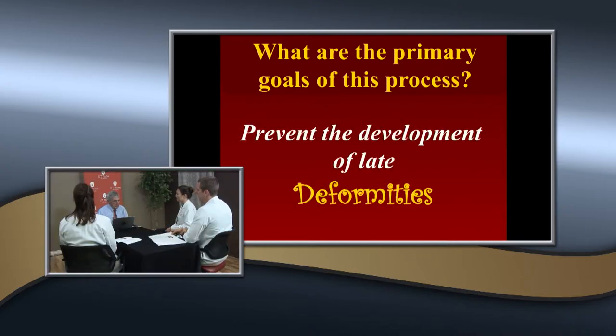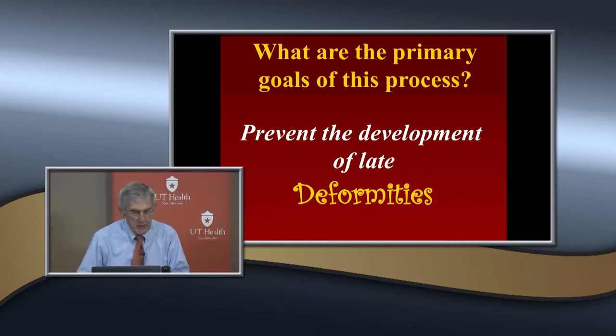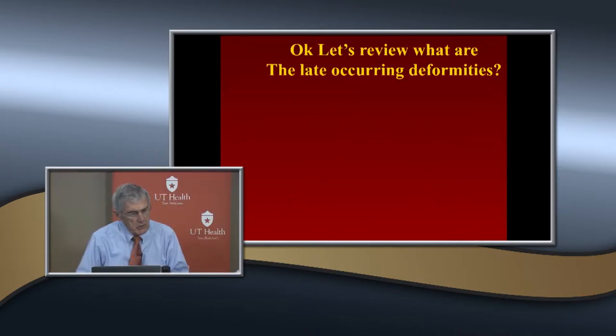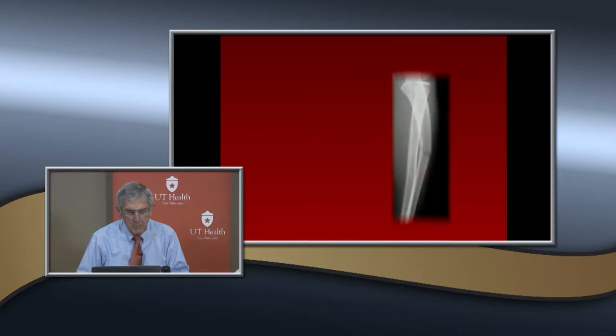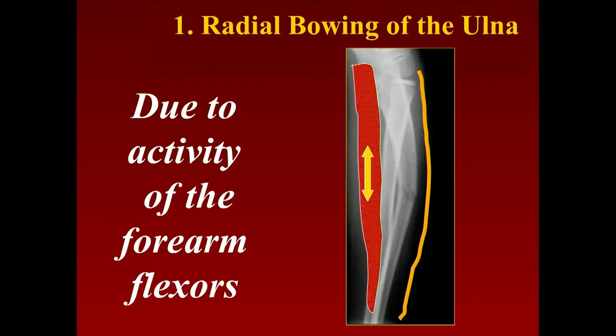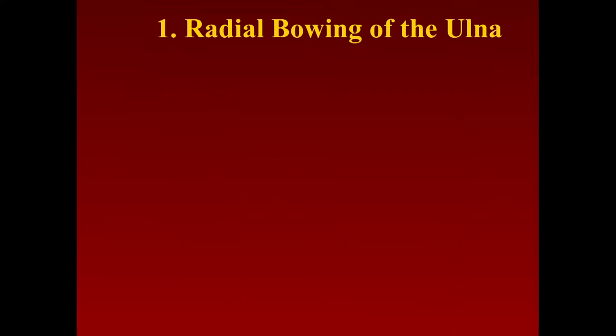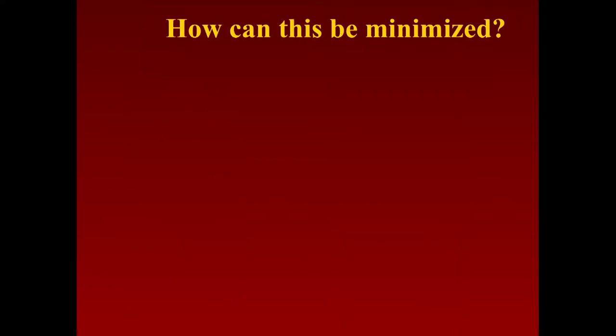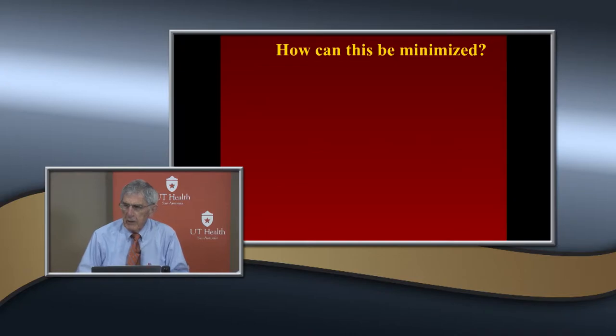Let's see what deformities occur that you have to worry about. One: they have a tendency to get a radial bow. What force does that? It's usually the forearm flexors that produce this. If you're going to treat this non-operatively, you have to put a good mold on your cast — you place it in mid-rotation.